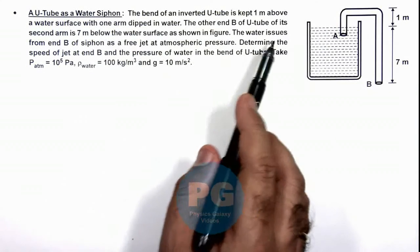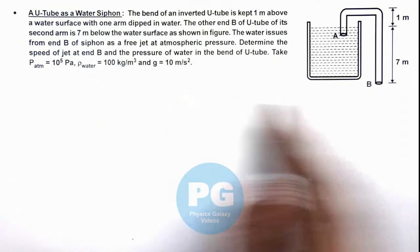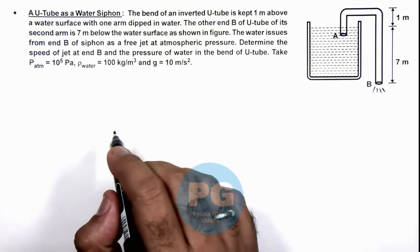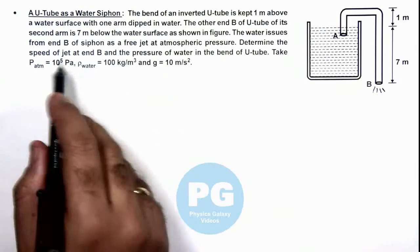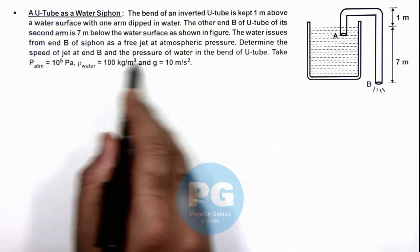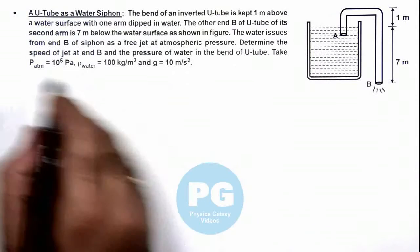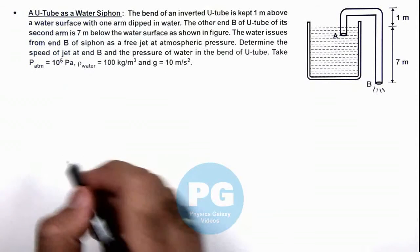The water issues from end B of the siphon as a free jet at atmospheric pressure. We are required to determine the speed of the jet at end B and the pressure of water in the bend of the U-tube. The atmospheric pressure and density of water are given to us.